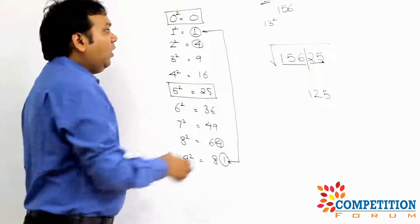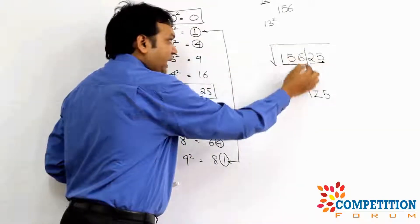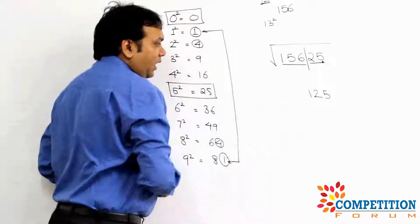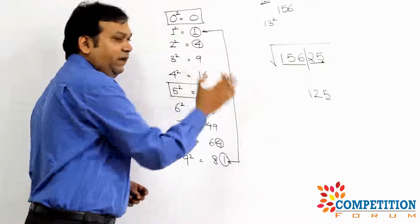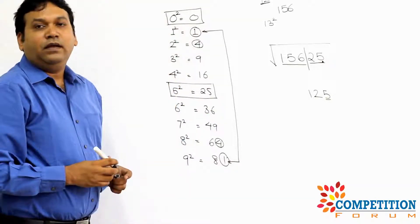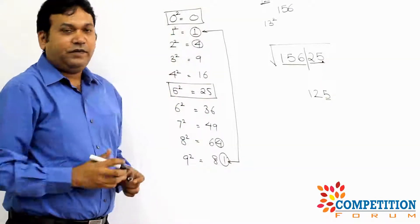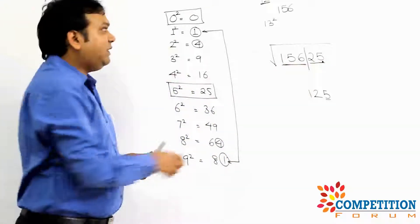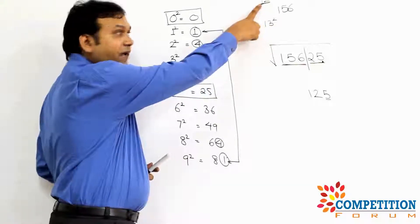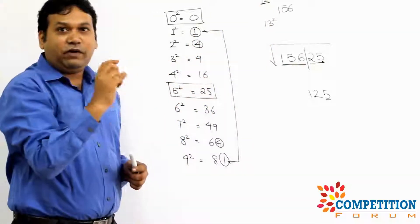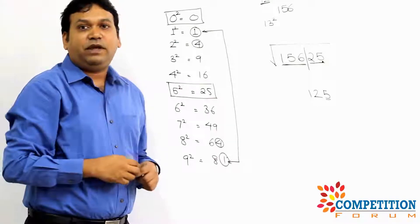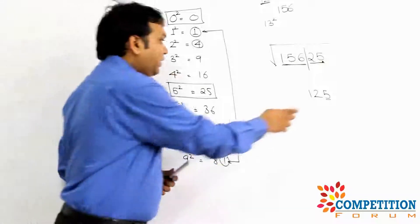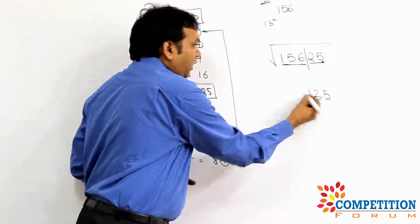Let's recap. Whatever number is given, split the rightmost two digits. Look at the last digit to determine the last digit of the square root: 0 ends in 0, 5 ends in 5 — uniquely. Then look at the remaining digits, 156, which is between 12² (144) and 13² (169). Take the lower value, 12. The answer is 125.